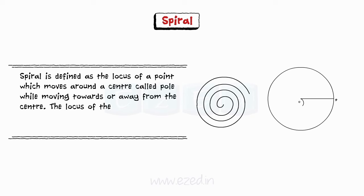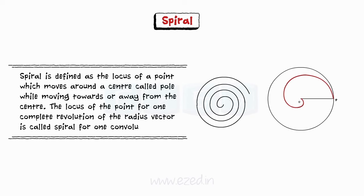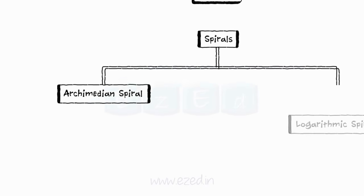The locus of the point for one complete revolution of the radius vector is called spiral for one convolution. There are two types of spirals: Archimedean spiral and Logarithmic spiral.